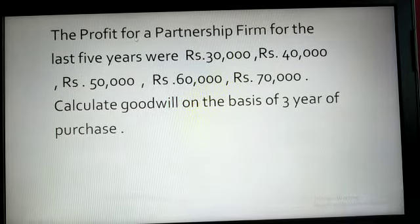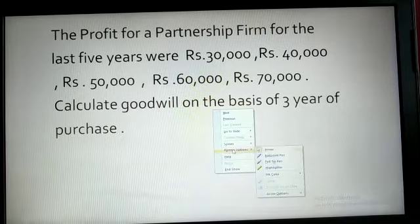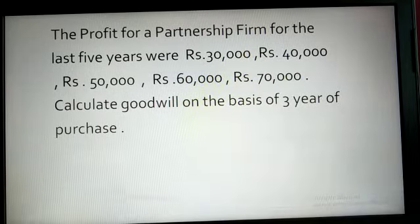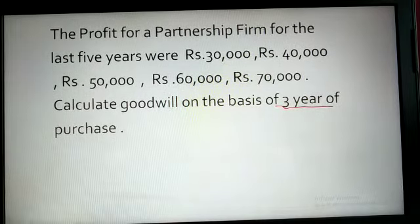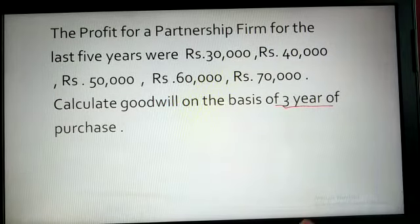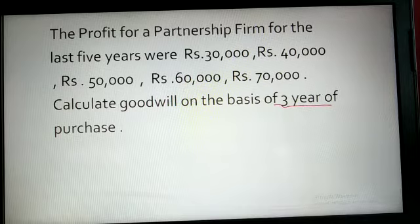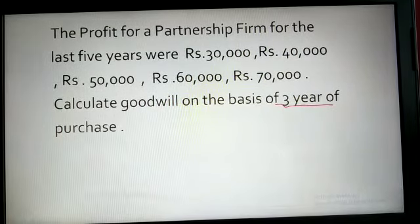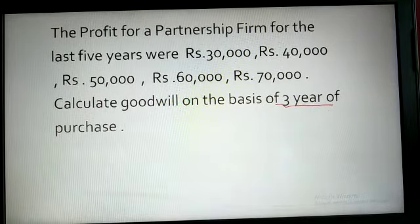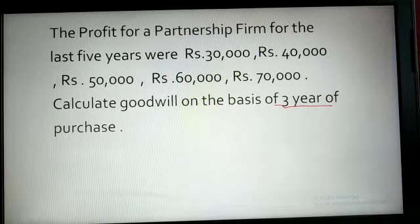Let us read this question. The profit for a partnership firm for the last five years were rupees 30,000, 40,000, 50,000, 60,000, and 70,000. Calculate goodwill on the basis of three years of purchase. In this question, profits are given for five years and the trend is increasing — first 30,000, then 40,000, 50,000, 60,000, and 70,000 — so the trend is increasing.